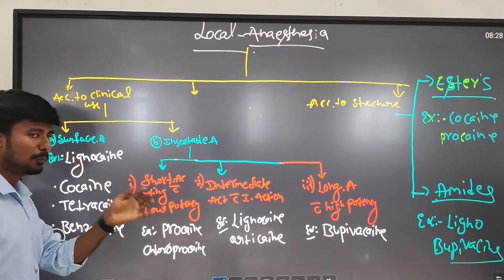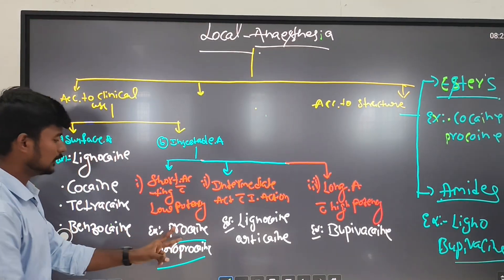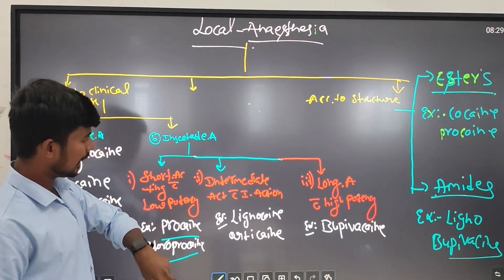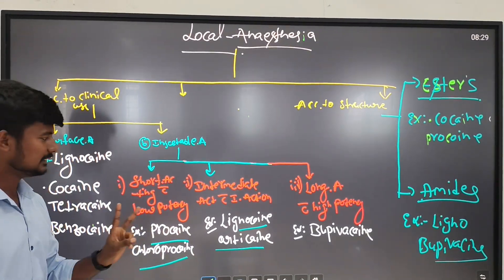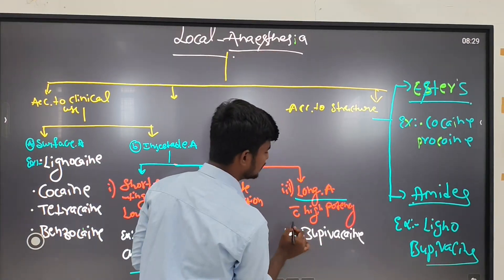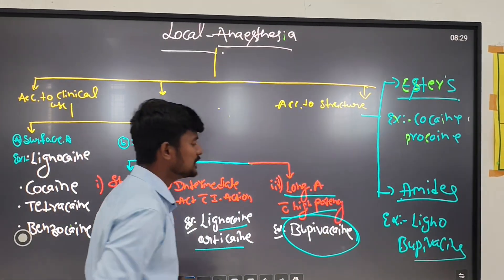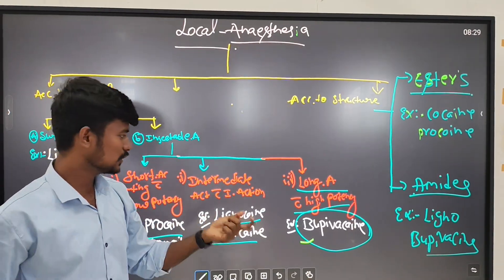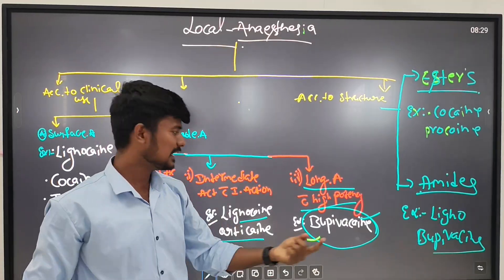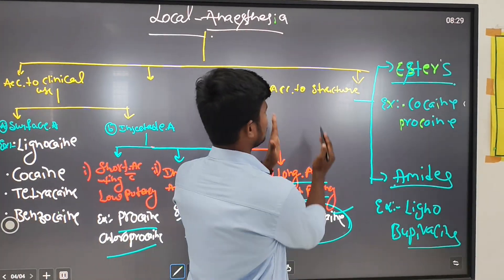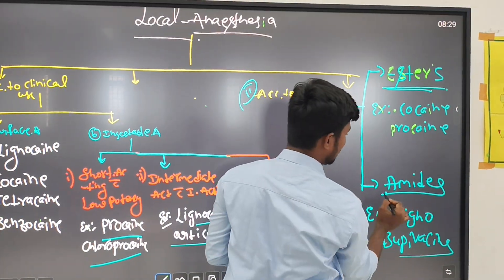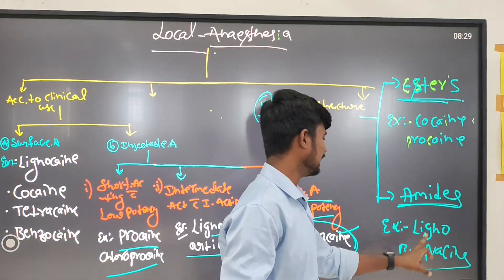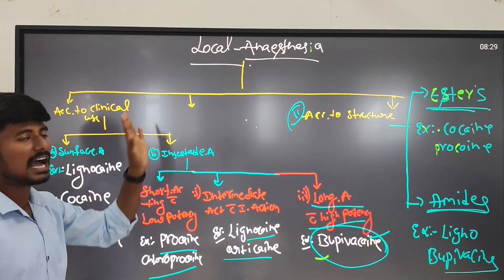Examples of short acting with low potency are procaine and chloroprocaine. Intermediate acting examples are lignocaine and articaine. Long acting with high potency is bupivacaine, a very important drug used in NCH and spinal anesthesia during surgery. According to structure, local anesthetics are classified as esters (e.g., procaine, cocaine) and amides (e.g., lignocaine, bupivacaine).